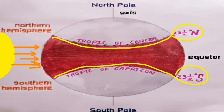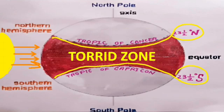Because the rays of the sun fall vertically straight at the area shown in red color, the intensity of the rays is maximum. Thus, the temperature is very, very high and this zone is known as the Torrid zone.